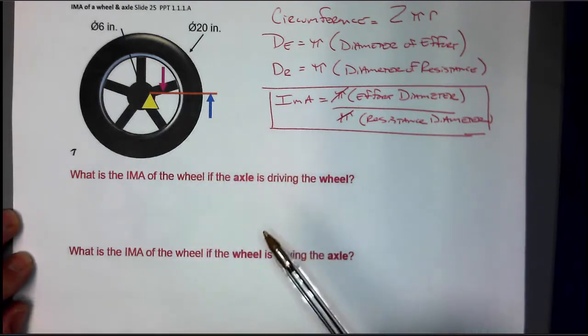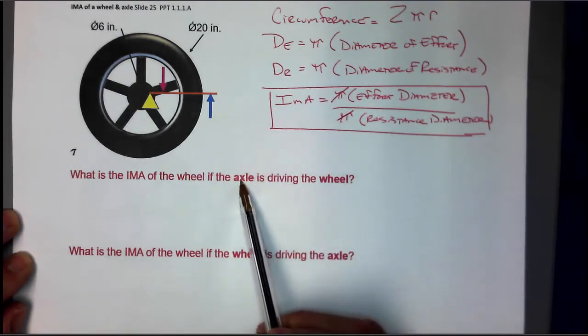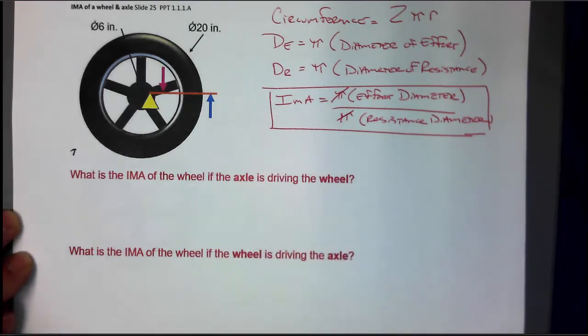What it's asking is the ideal mechanical advantage of the wheel if the axle is driving the wheel. It's different if the axle's driving or the wheel's driving, so let's take a look at this.